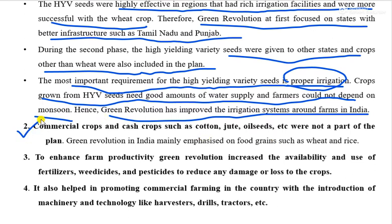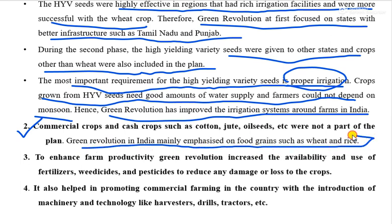Commercial crops and cash crops such as cotton, jute, and oil seeds were not a part of the plan. Green revolution in India mainly emphasized on food grains such as wheat and rice — the concept revolved around these cereal crops.